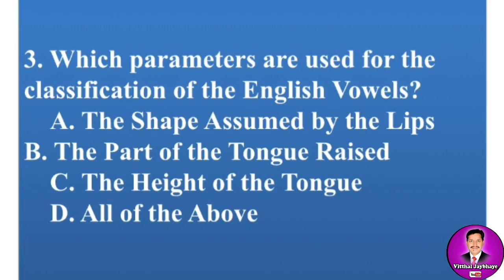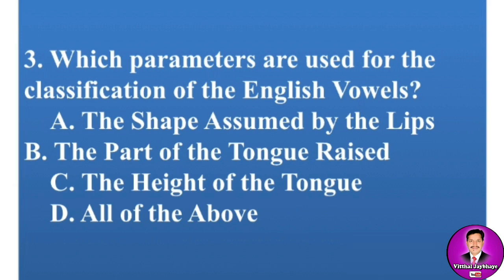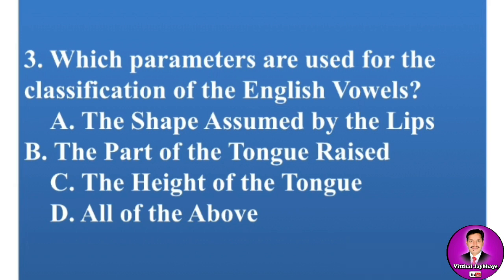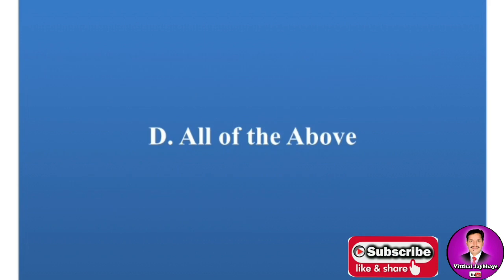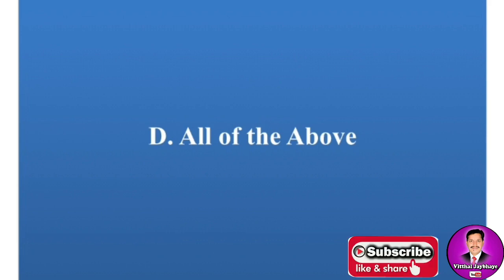Next MCQ: Which parameters are used for the classification of English vowels? Options are: A, the shape assumed by the lips; B, the part of the tongue raised; C, the height of the tongue; D, all of the above. Note down your answer — the correct answer is D, all of the above: lips, part of the tongue raised, and height of the tongue.